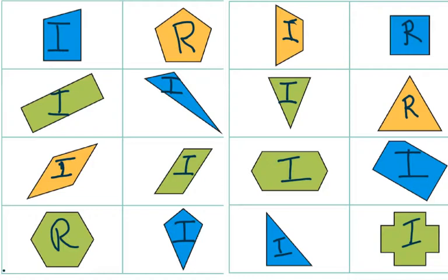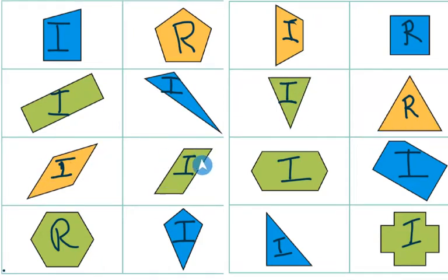So some ones to pull out from here to remember: regular pentagon, square, scalene triangle, isosceles triangle, equilateral triangle, rhombus, parallelogram, kite, right-angled scalene triangle. Those are some nice ones to remember.